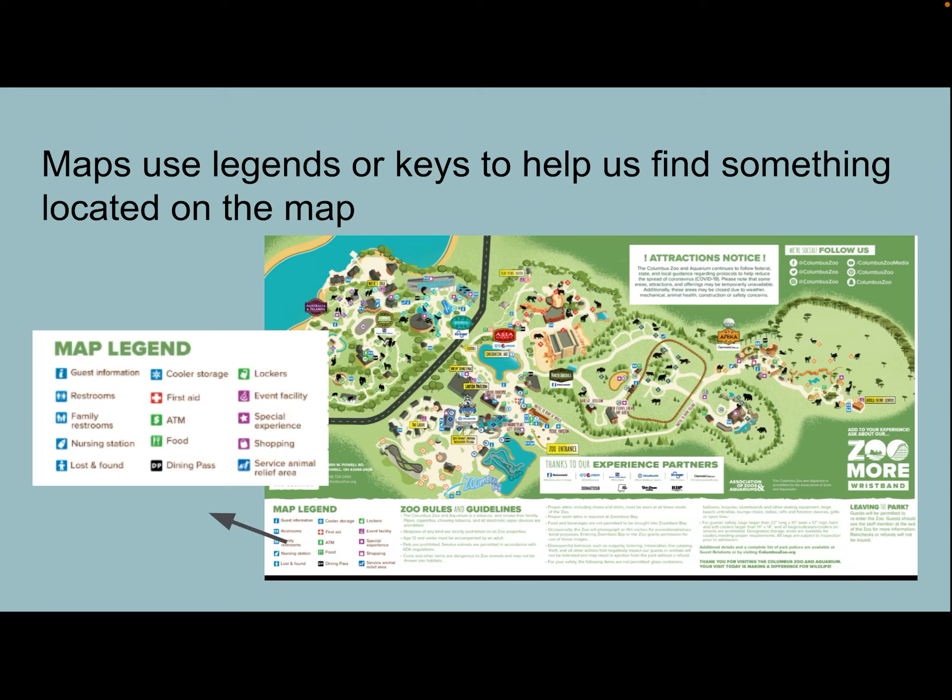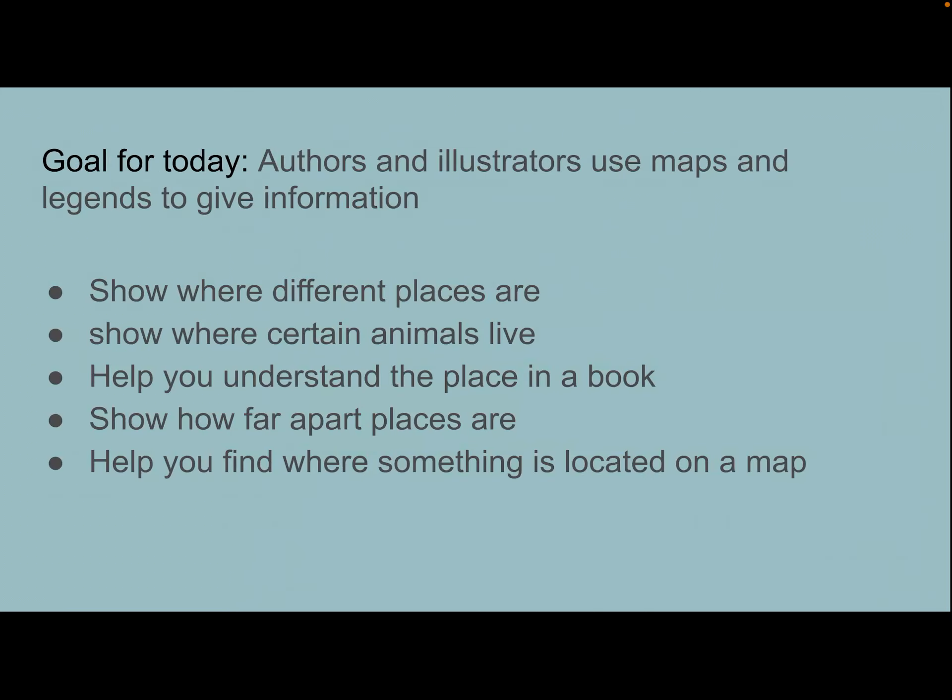Maps can also use legends or keys to help us find something located on the map. Here's an example from a book about the zoo. The legend helps the reader see where different locations, such as the restroom and first aid station, are located at the zoo.